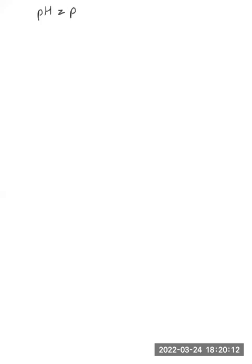The other equation we will use for calculations is the Henderson-Hasselbalch equation. That equation is: pH equals pKa plus log of the conjugate base concentration divided by the weak acid concentration. We use this in two possible situations: when we are dealing with dominant species, and when we are dealing with buffer solutions.